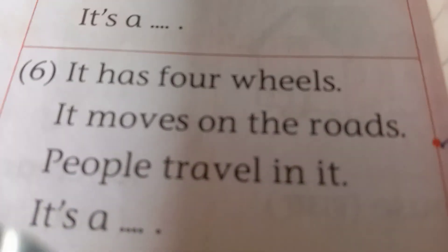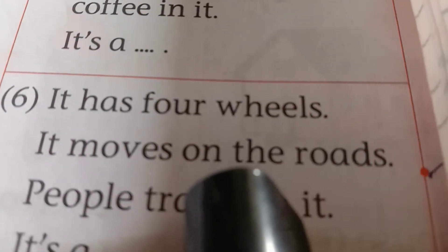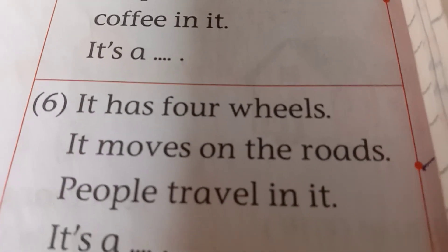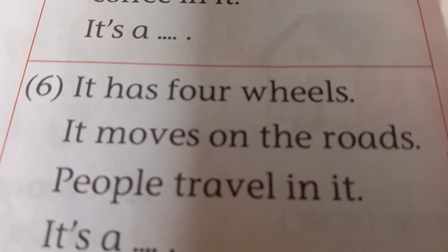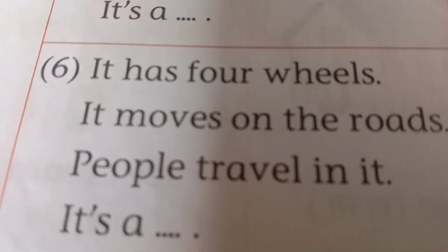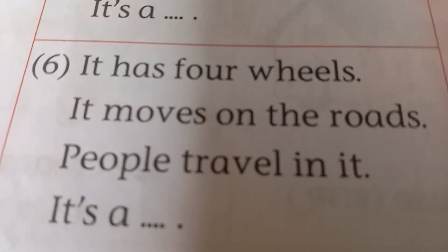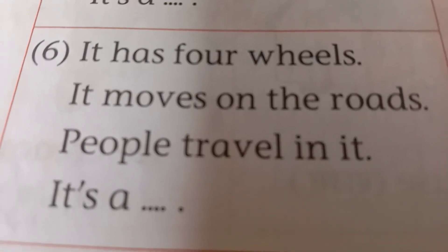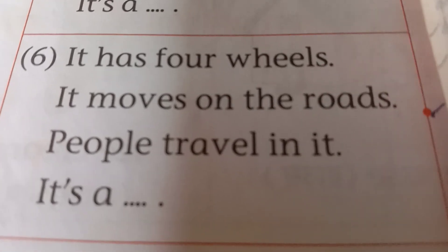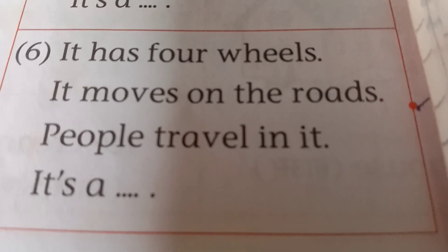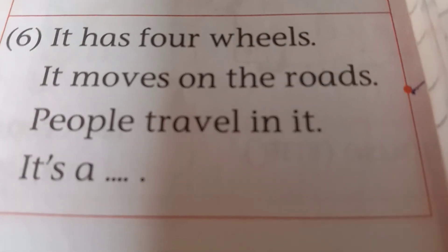It has four wheels. It moves on the roads. People travel in it. बघा, त्याला चार चाके असतात. ते रोडवरून जाते. लोक त्यातून प्रवास करतात. आपण त्यातून प्रवास करतो. ओळखलं? आणि ते रोडवरून हळूहळू जाते. It is a van.